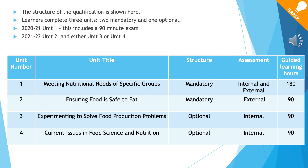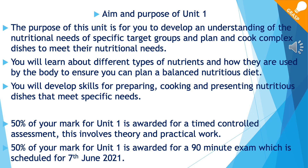This shows the structure of the qualification. In the first year we just focus on Unit 1, which is meeting nutritional needs of specific groups. The aims and purposes of Unit 1 is for you to develop an understanding of the nutritional needs of specific target groups and then to plan and cook complex dishes to meet their nutritional needs.